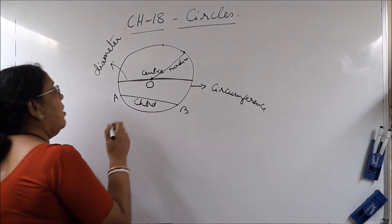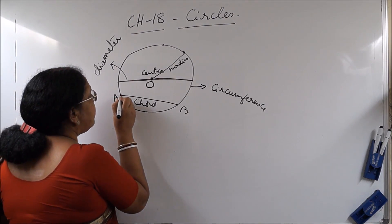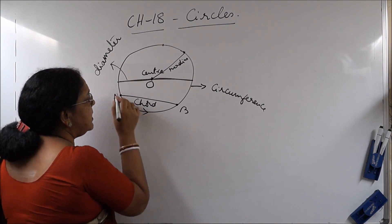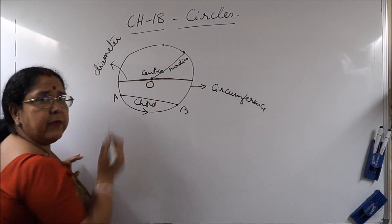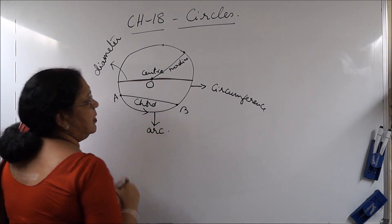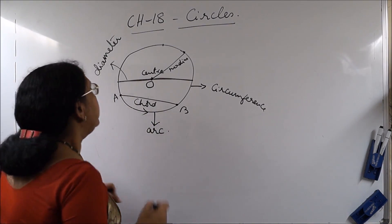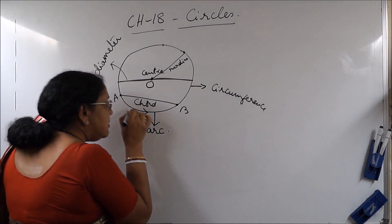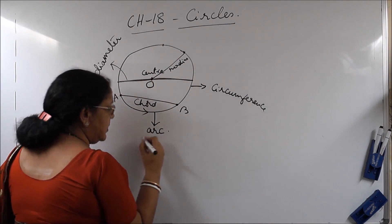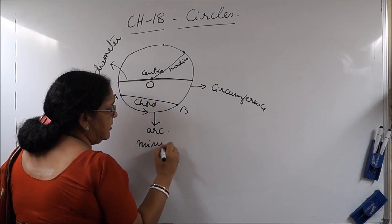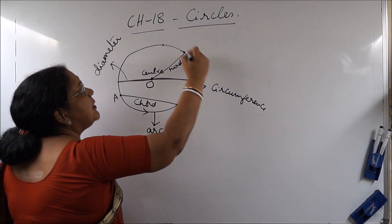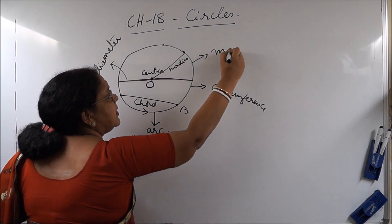The part of the circumference of the circle — say AB — is called an arc of a circle. Now, if it is the smaller part of the circumference, then it is called the minor arc, and the bigger part of the circumference is called the major arc.